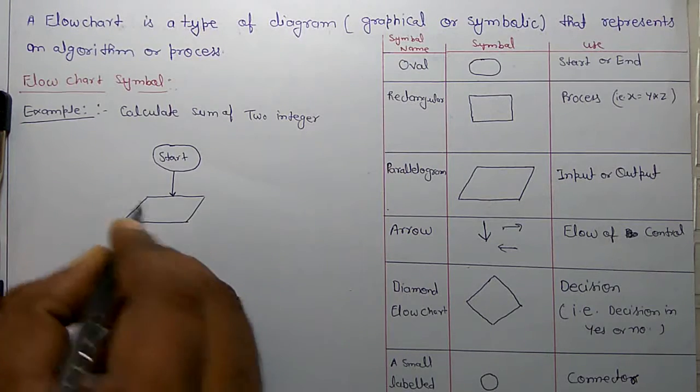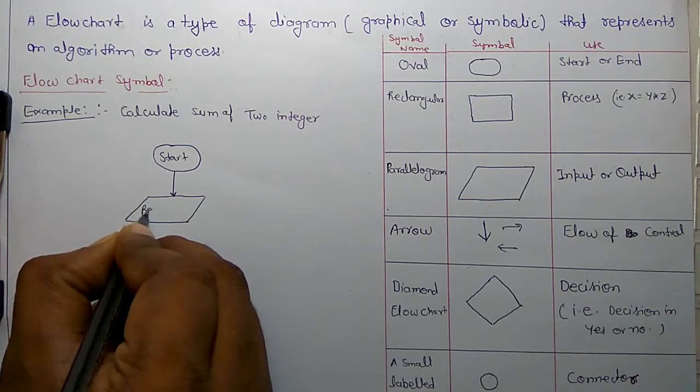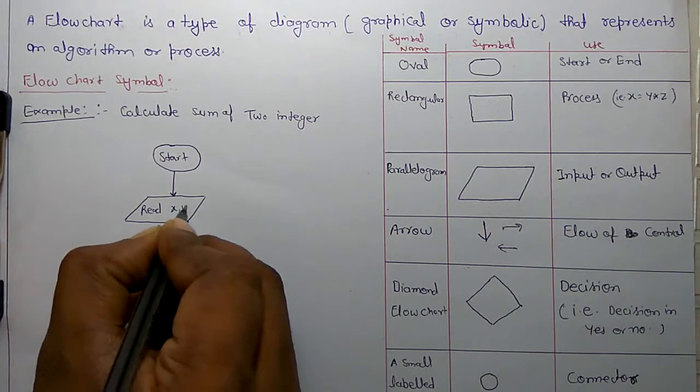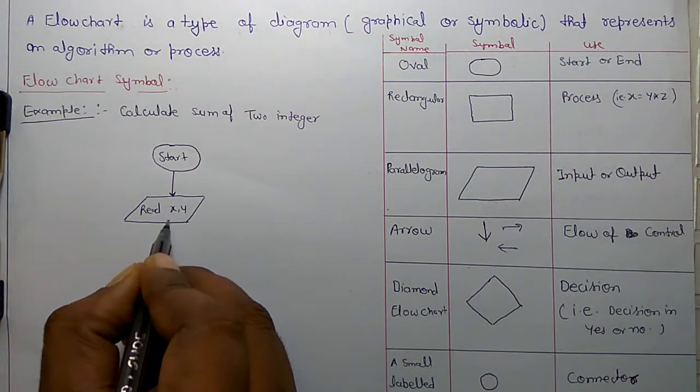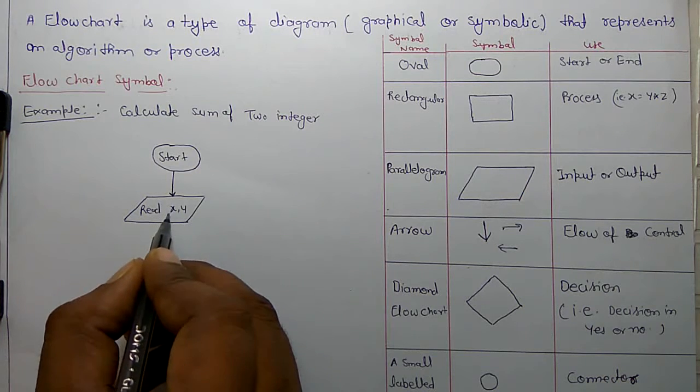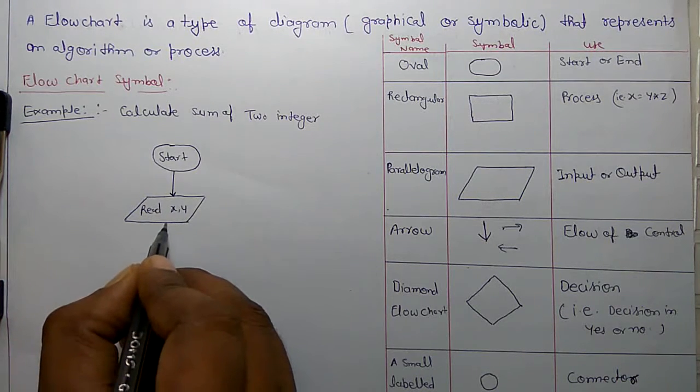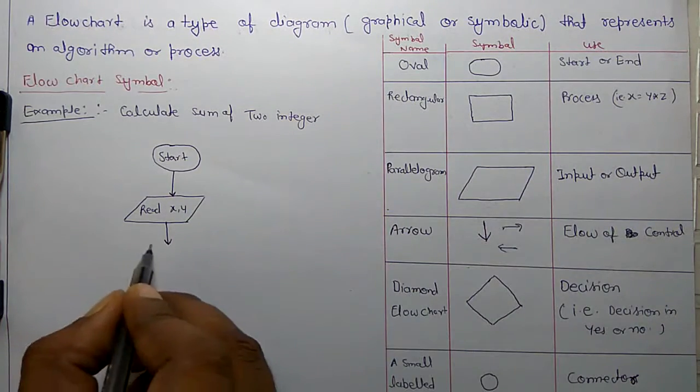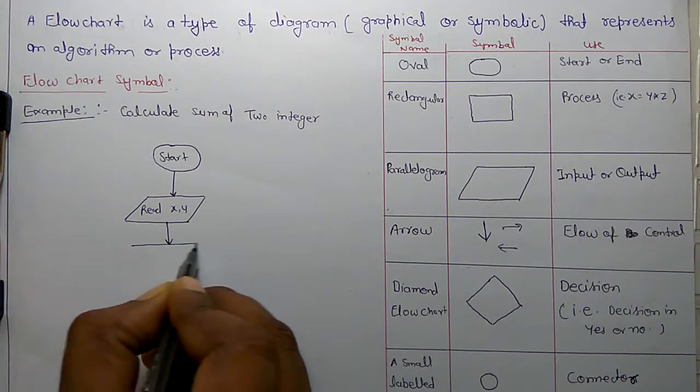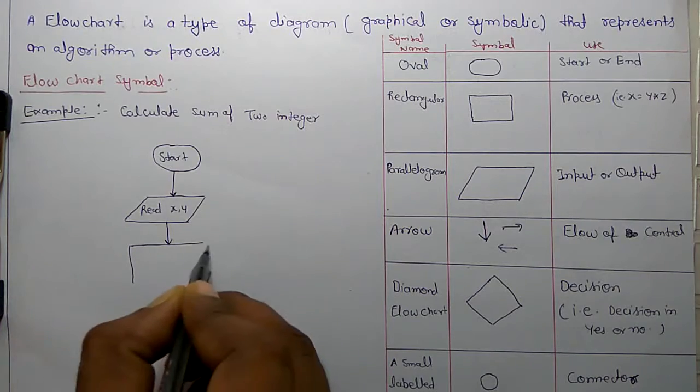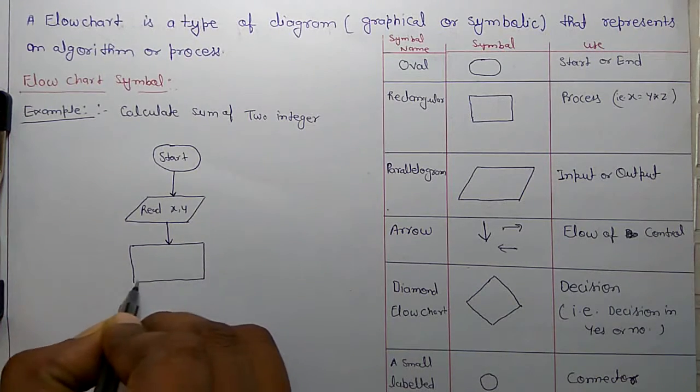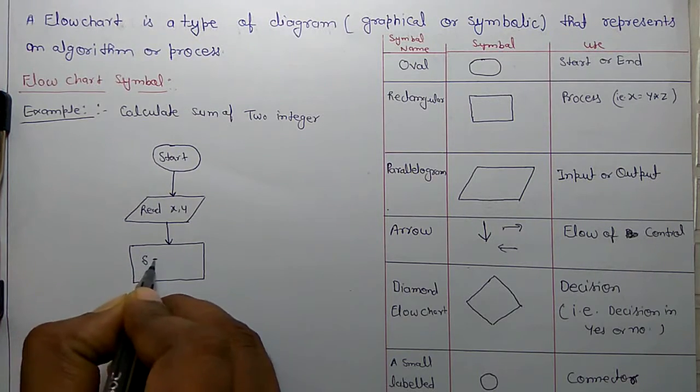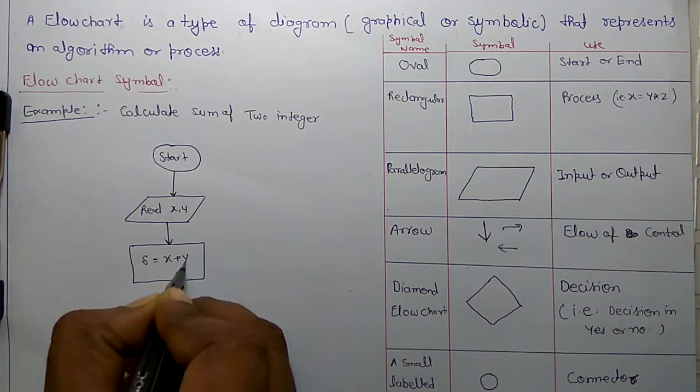We have written input or read x and y. If you have read input x and y, then process it. For process you have to use rectangle symbol. This rectangular symbol will process x and y. So this is, for example, new variable s equal to x plus y.